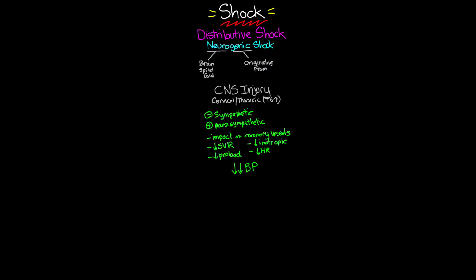Another thing we may see in patients with neurogenic shock is hypothermia, specifically in the patient's core, due to dysregulation within the hypothalamus. Without a sympathetic response, we're not getting the vasoconstriction that often leads to cool, clammy skin. It's also really important to note that when potentially diagnosing a patient with neurogenic shock, we must rule out all other possible causes of shock before making that determination.